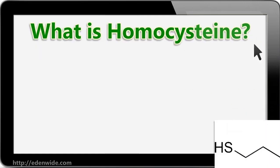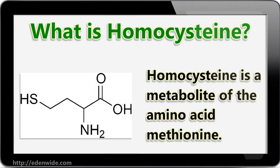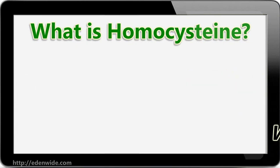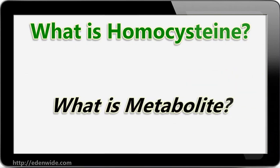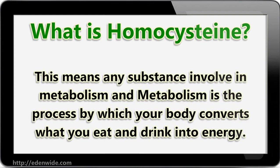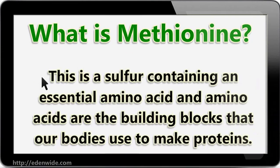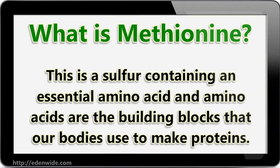What is homocysteine? Homocysteine is a metabolite of the amino acid methionine. A metabolite is any substance involved in metabolism, and metabolism is the process by which your body converts what you eat and drink into energy. What is methionine? This is a sulfur-containing essential amino acid.